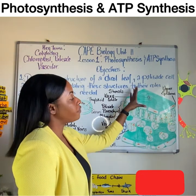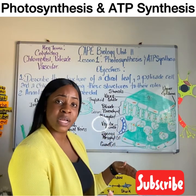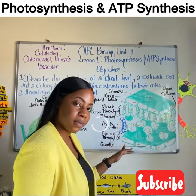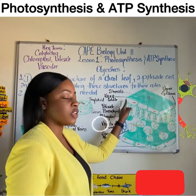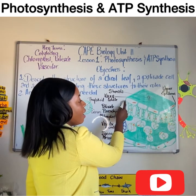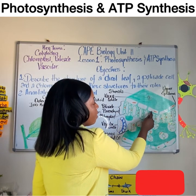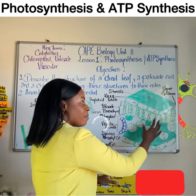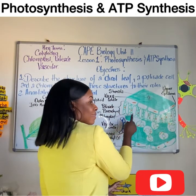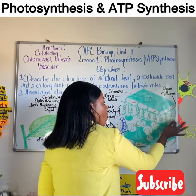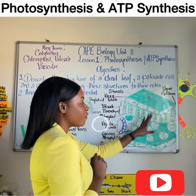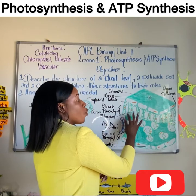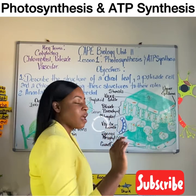At the upper region of the dicot leaf — CAPE Biology students, start using your terminologies: upper is adaxial, lower is abaxial. At the upper region we find the waxy cuticle. Below the waxy cuticle we see a thin layer of cells called the upper epidermis. Immediately below the upper epidermis, we have a group of cells tightly packed with numerous green organelles — chloroplasts. These cells make up the palisade parenchyma.